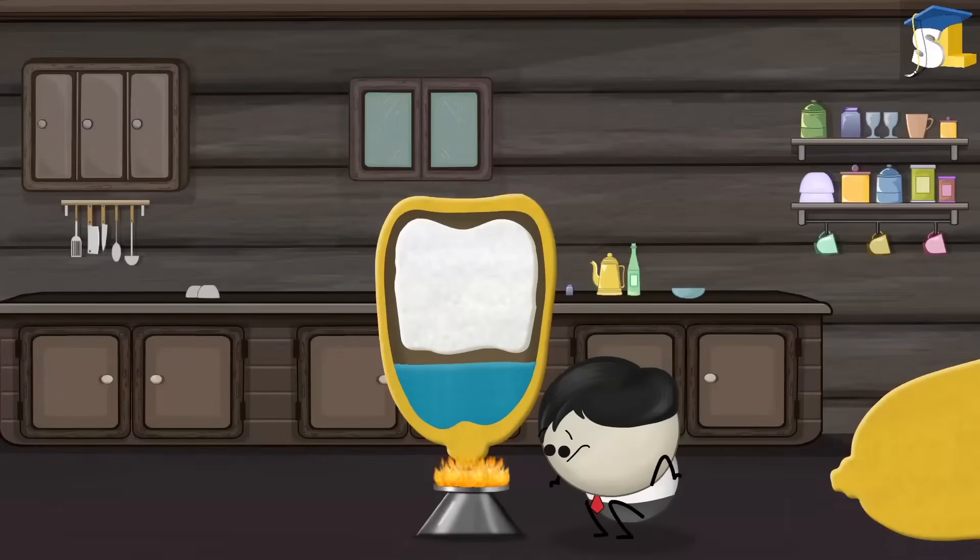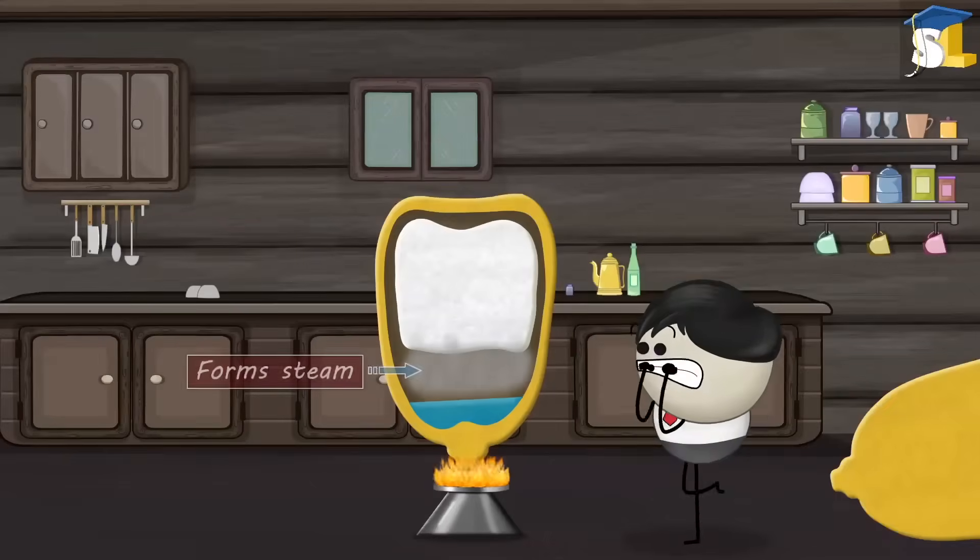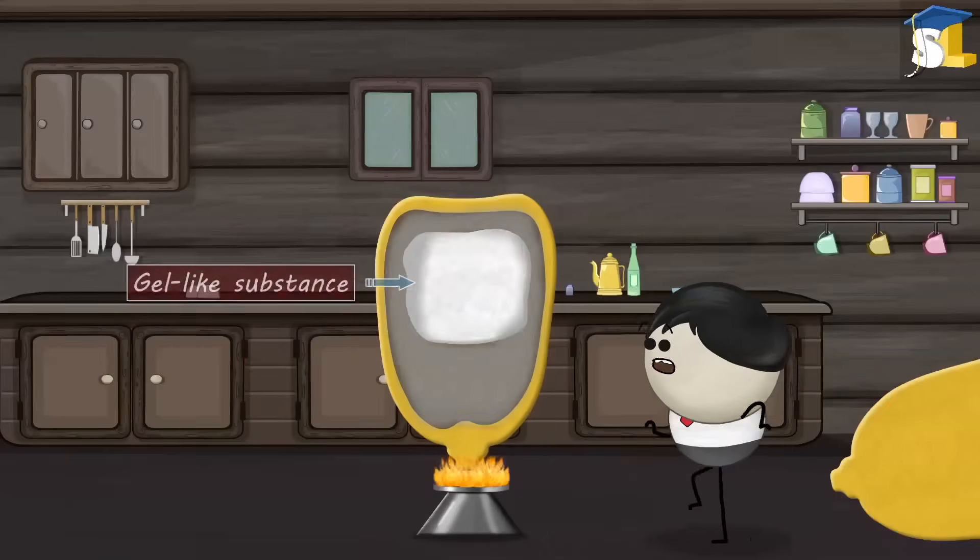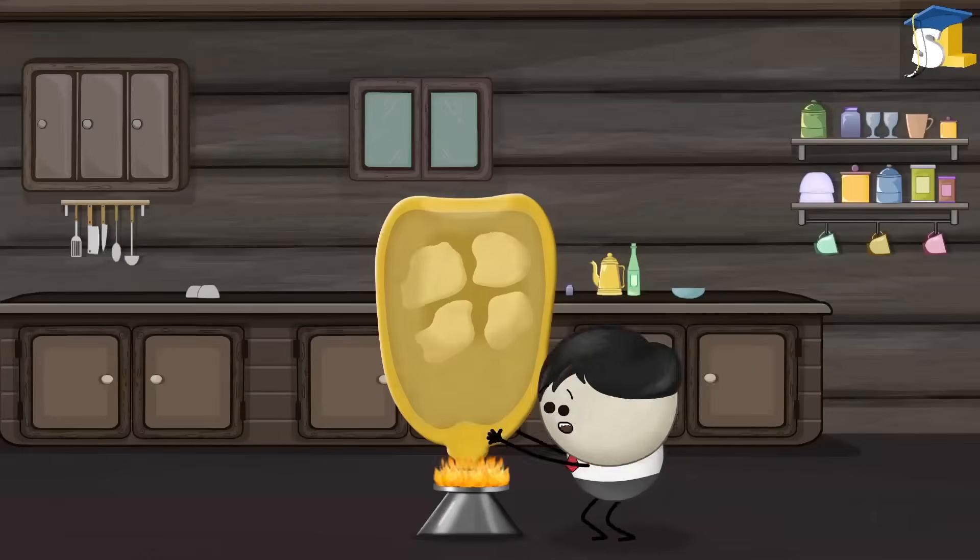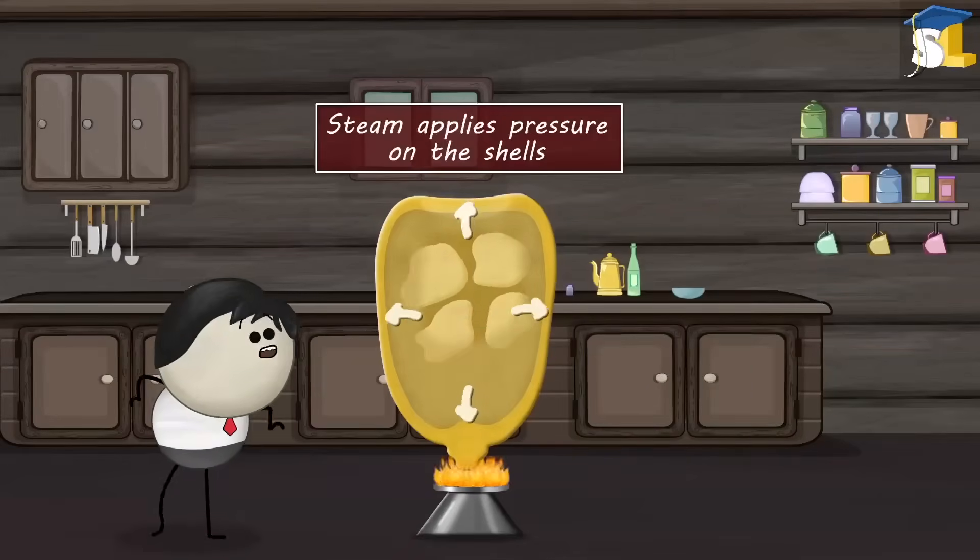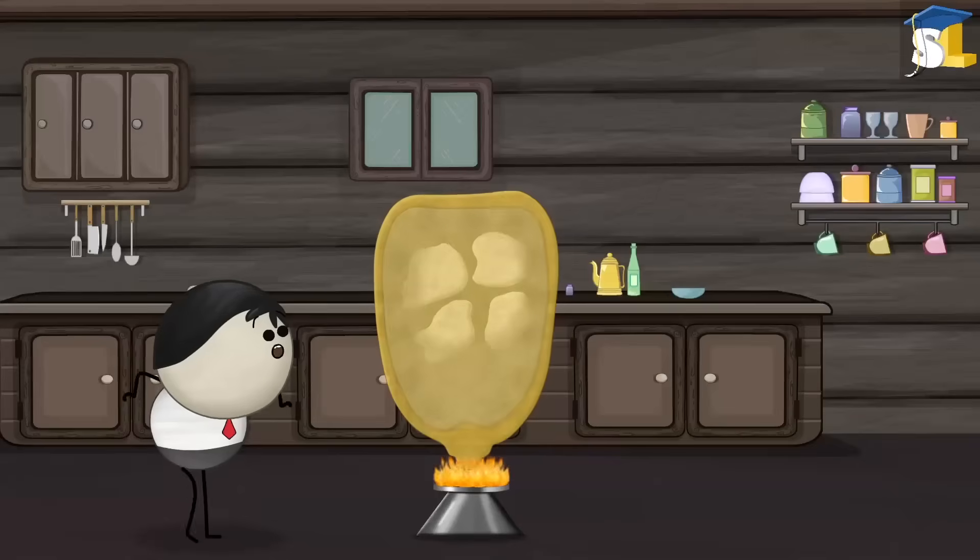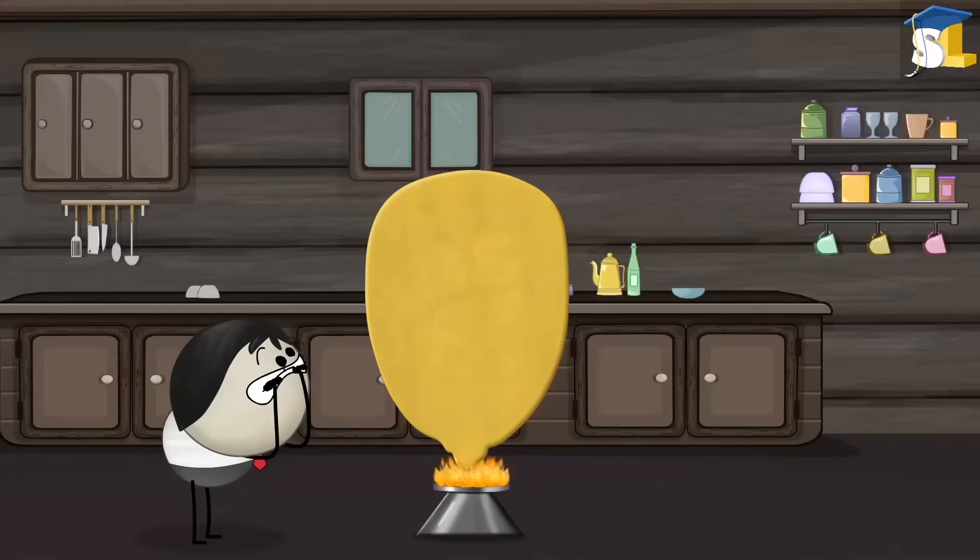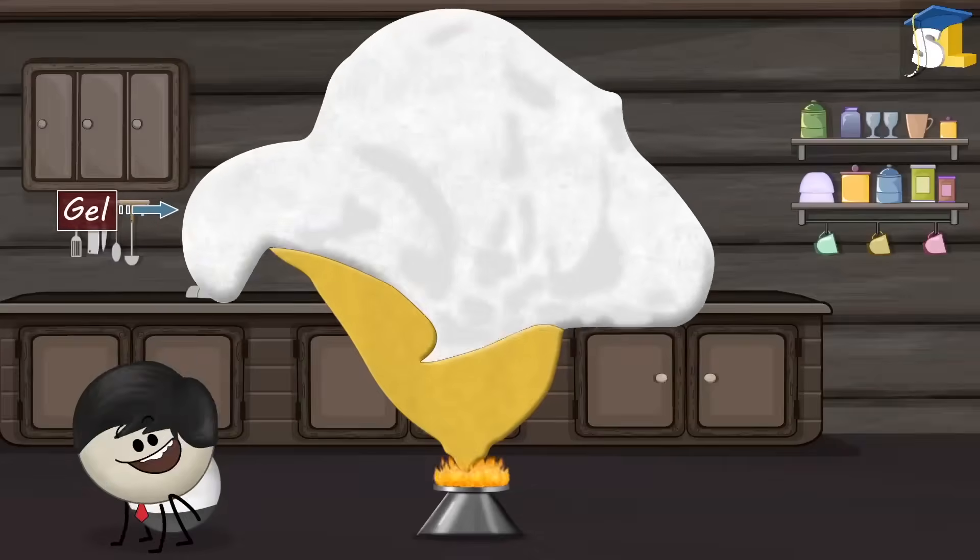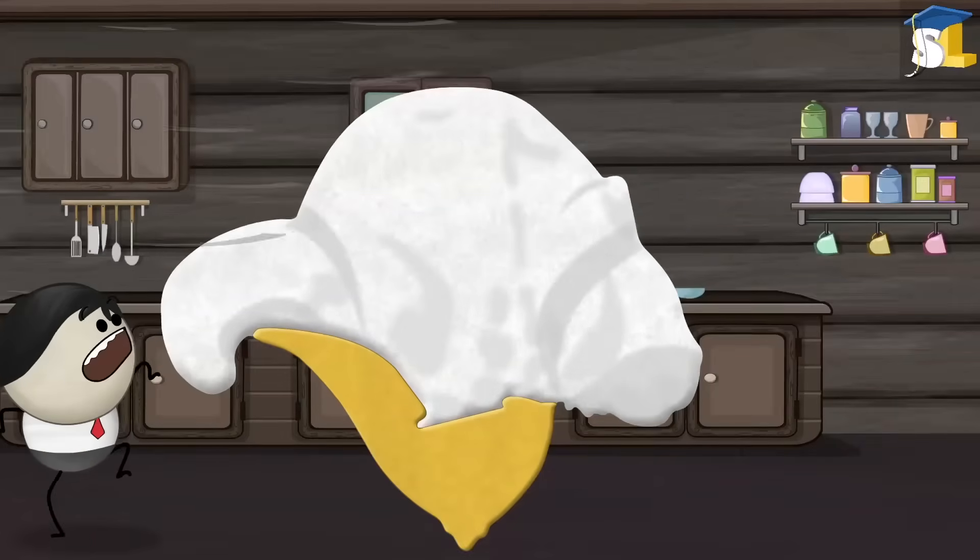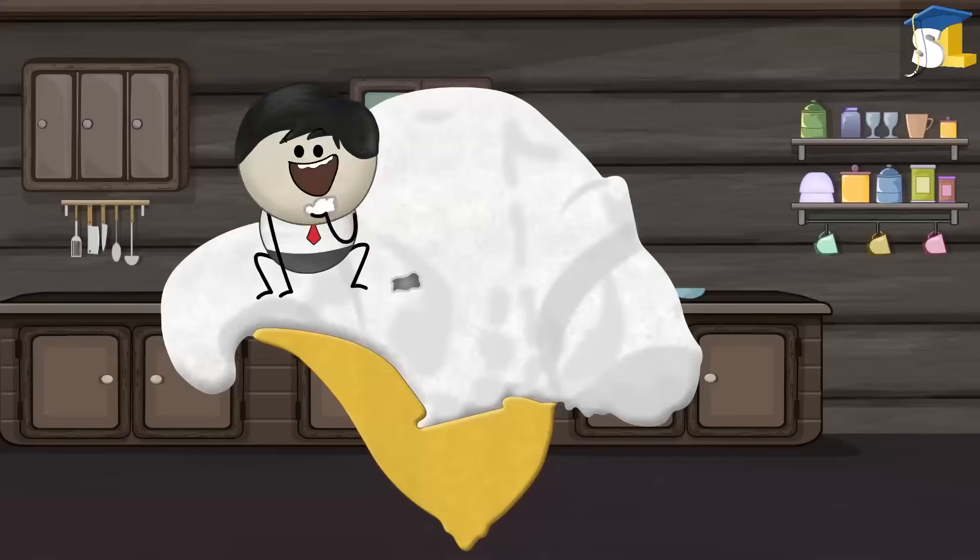When we heat popcorn kernels, the water inside them forms steam and starts to expand, while the starch turns into a gel like substance. Being enclosed, the expanding steam applies pressure on the shells. Eventually, when the shells cannot hold the pressure, they burst open releasing the steam and gel. When this gel comes in contact with air, it rapidly solidifies forming fluffy popcorn.